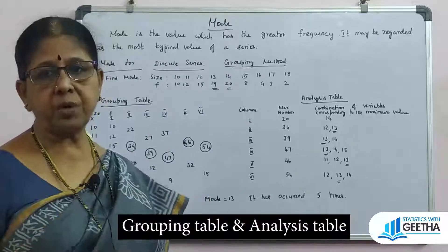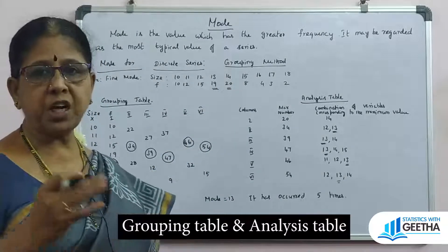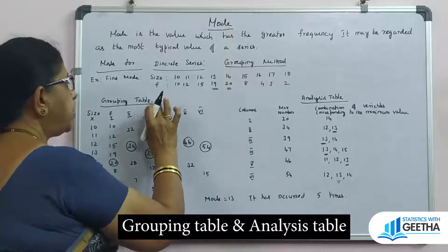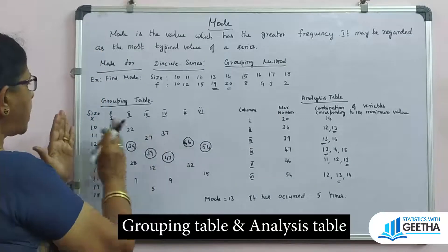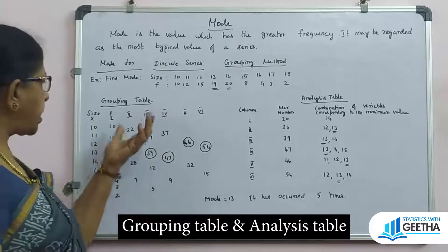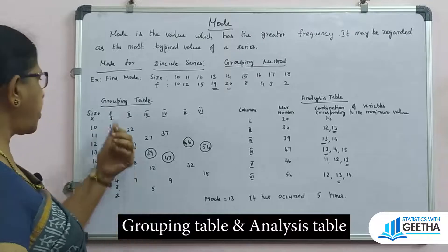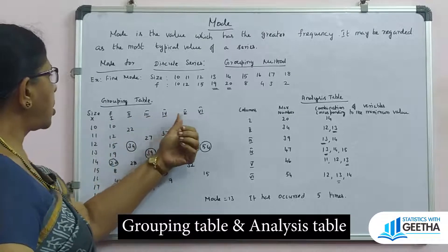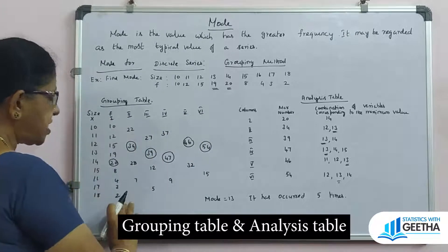We go to the grouping method. In the grouping table, we select size in the first column. Then we open 6 columns: column 1 contains the frequencies as they are; column 2 adds frequencies two by two starting from the first — so 10 plus 12 is 22, 15 plus 19 is 34, 20 plus 8 is 28, 4 plus 3 is 7.